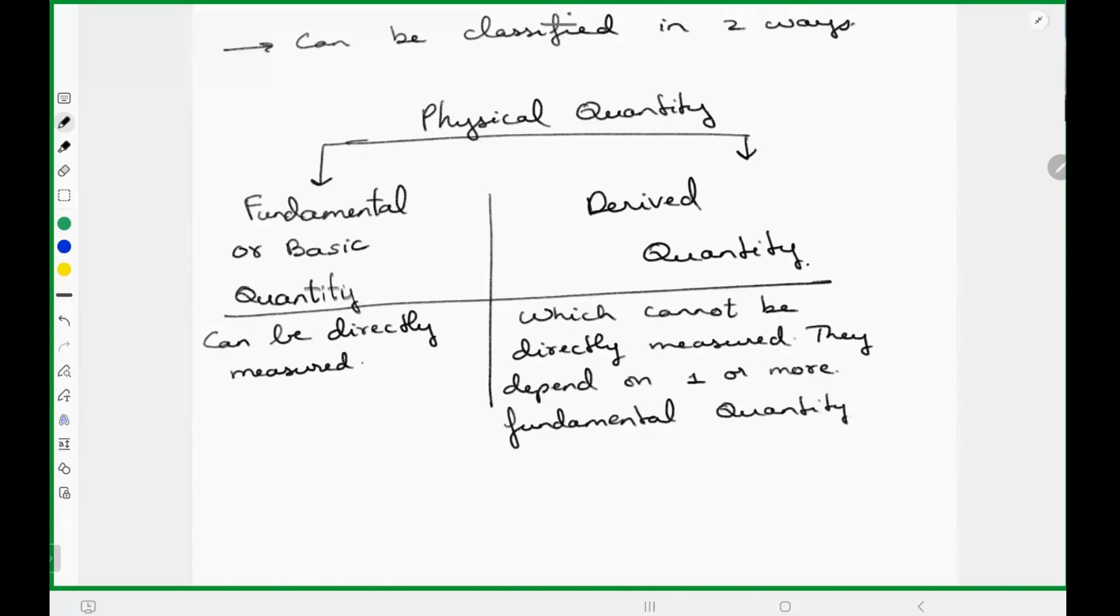They depend on one or more fundamental quantity for their measurement. What do you mean by directly measuring? I tell you, for example, when we talk about length of the table, there is only one option: take a scale and measure it. So that's directly measuring.